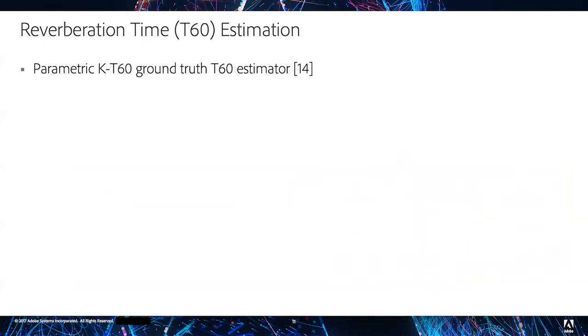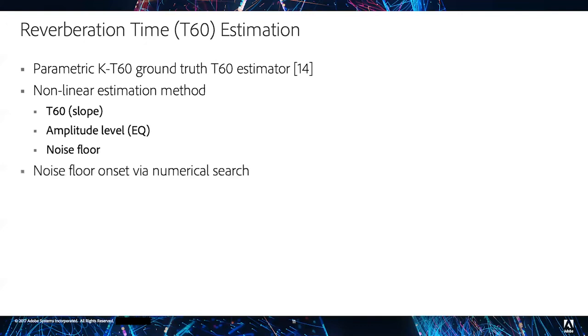This ground truth estimator first takes an impulse response, computes a smooth amplitude envelope on a log scale, models the envelope via nonlinear parametric function of the T60 amplitude and noise floor, and solves via nonlinear optimization. We can further estimate the noise floor onset time by simple numerical search on the estimated parametric curve.